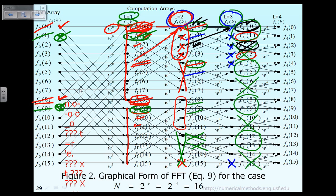Finally, we compute the last level: vector F4 at level 4. This is the last level because L equals R, and in this case R equals 4. To compute F40, we need data from F30 and F31; to compute F41, we need the same two data points. So we compute F40 and skip the next one, then compute F42 and skip F43, then compute F44 and skip F45, and so on.